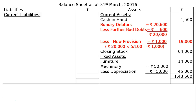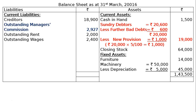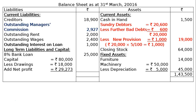On the liability side, current liabilities: creditors rupees 18,900; outstanding manager's commission rupees 2,927; outstanding rent rupees 2,000; outstanding wages rupees 2,400; outstanding interest on loan rupees 1,000. These four are adjustment items shown twice in the question. Long-term liabilities: 8 percent bank loan rupees 25,000 taken on 1st October. Capital: rupees 80,000 less drawings rupees 18,000 plus net profit rupees 29,273, giving rupees 91,273. Total liabilities rupees 1 lakh 43,500. Both sides tally — this is the final answer.